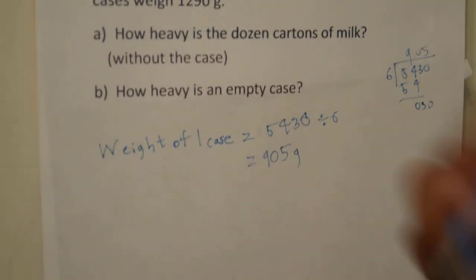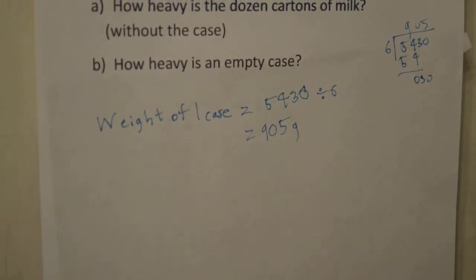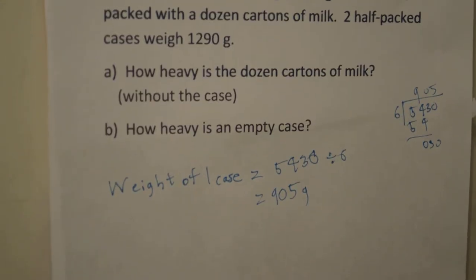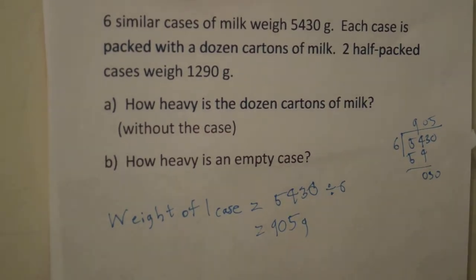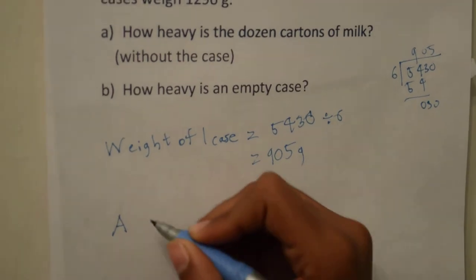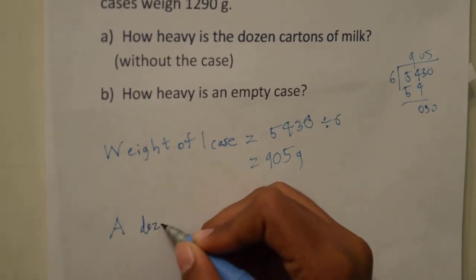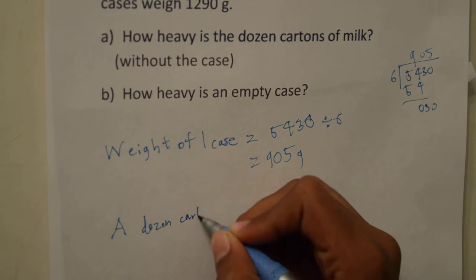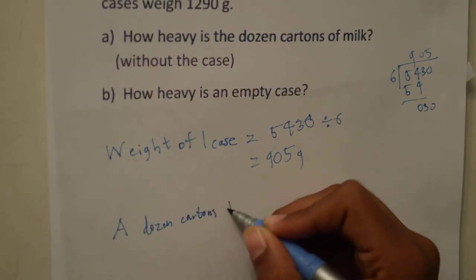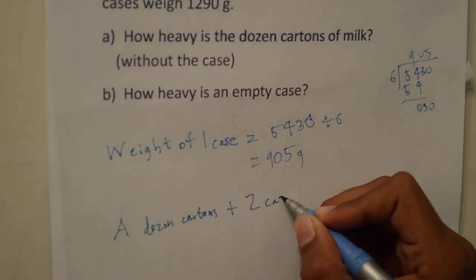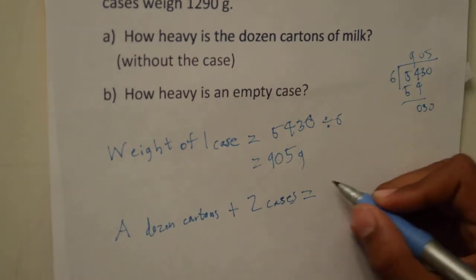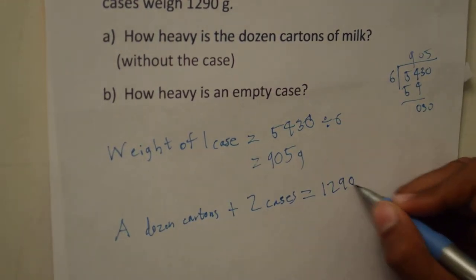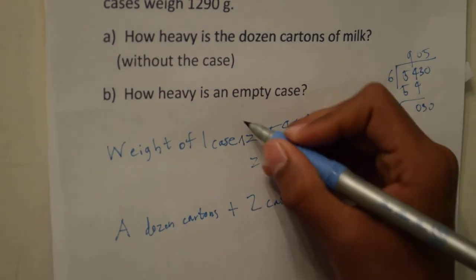And now we know that two half-packed cases, so a dozen cartons of milk and two cases, equal 1,290 grams.